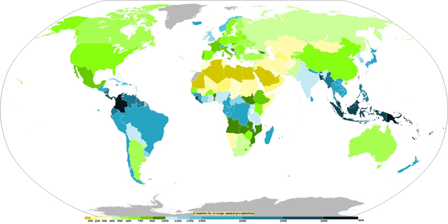In Hawaii, Mount Waialeale on the island of Kauai is notable for its extreme rainfall, as it has the second-highest average annual rainfall on Earth, with 12,000 mm. Storm systems affect the state with heavy rains between October and March. Local climates vary considerably on each island due to their topography, divisible into windward and leeward regions based upon location relative to the higher mountains.